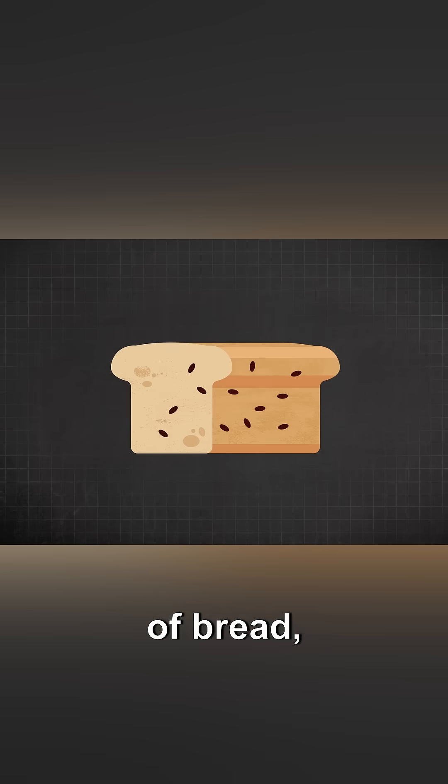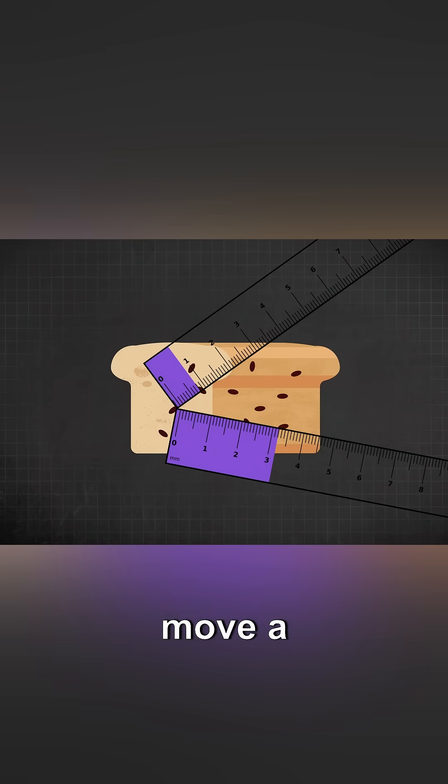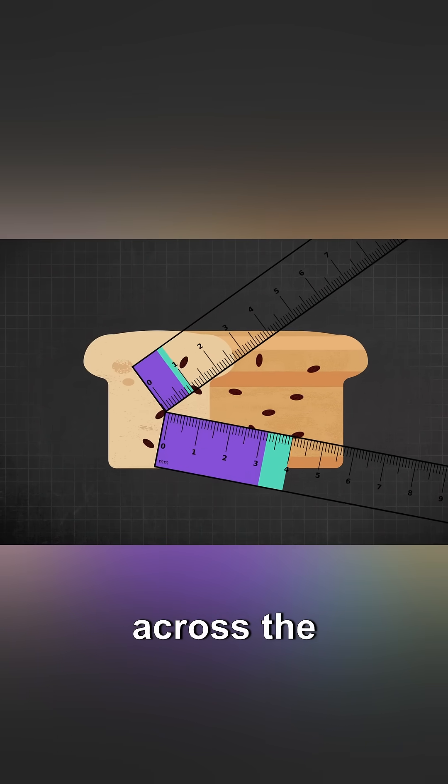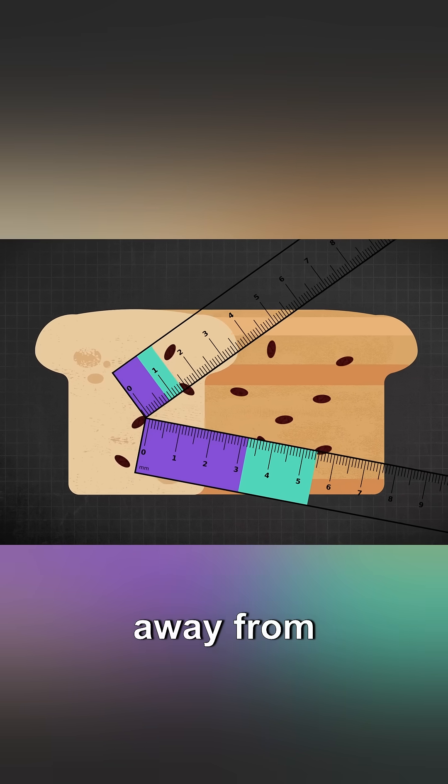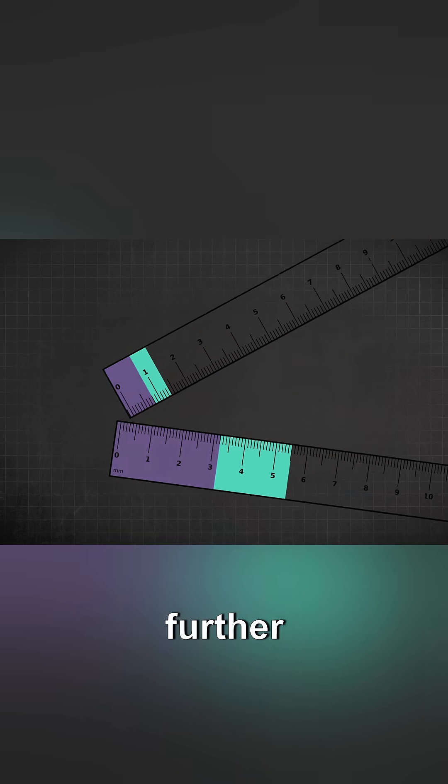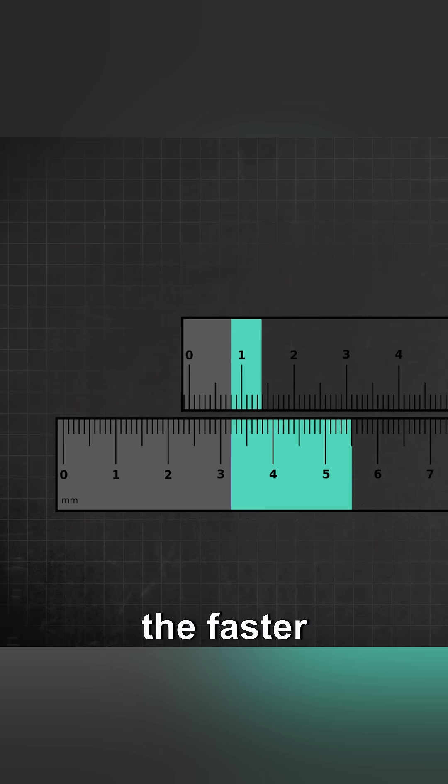If you stretch that loaf of bread, then the raisin right next to you is just going to move a little bit away from you. But a raisin across the loaf is going to expand really far away from where you are. So the further away you are from something, the faster it moves away from you.